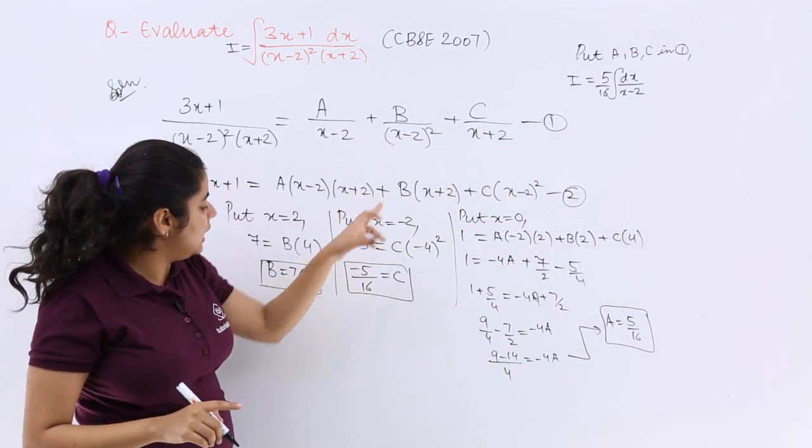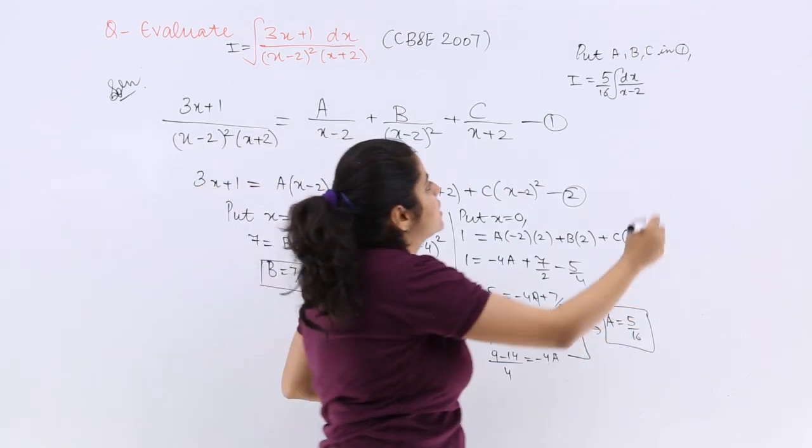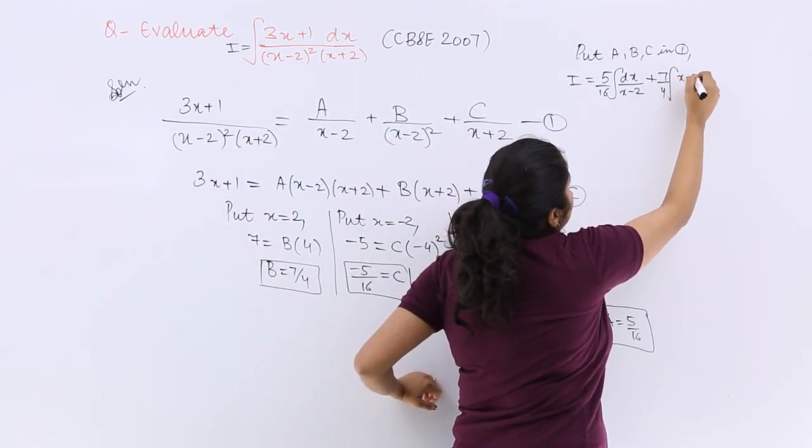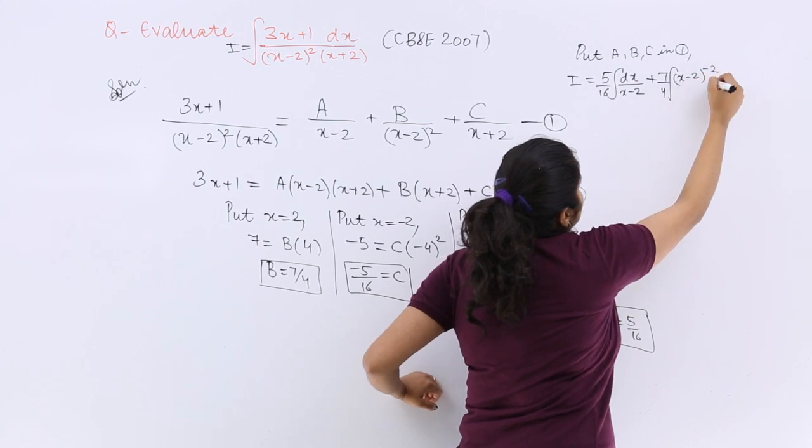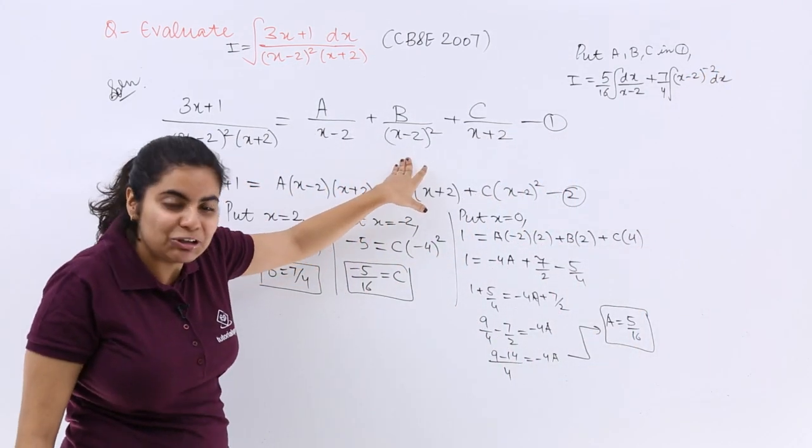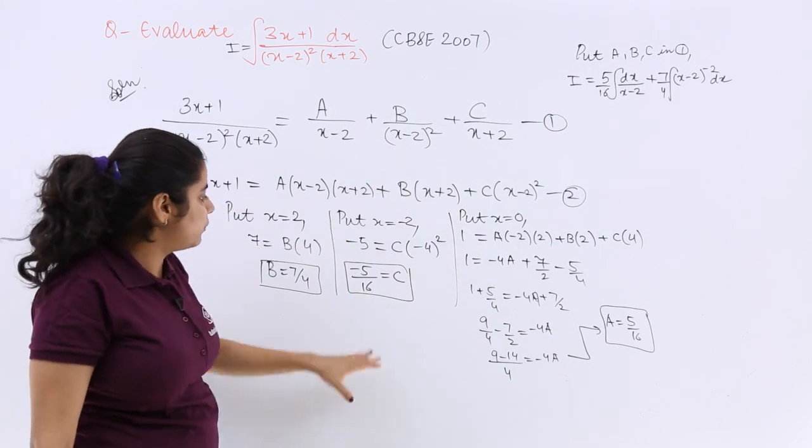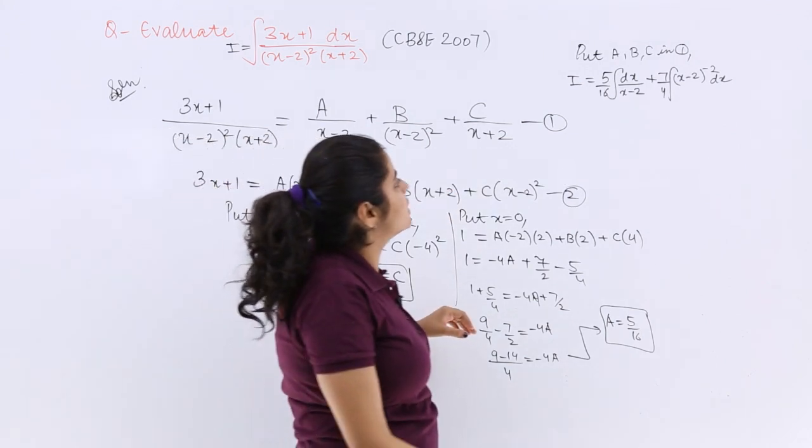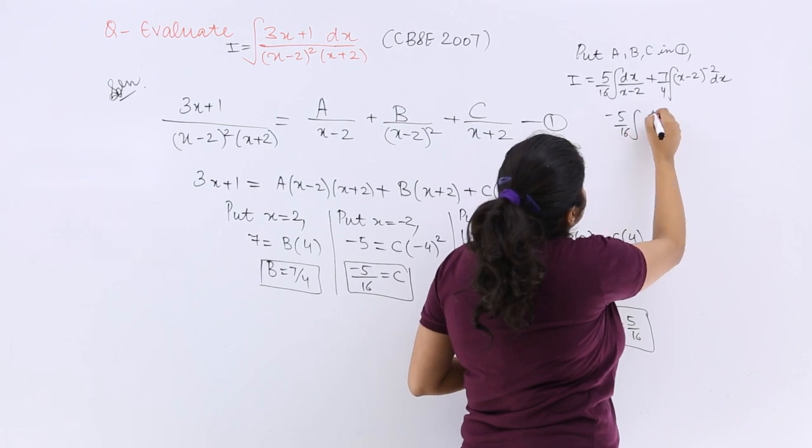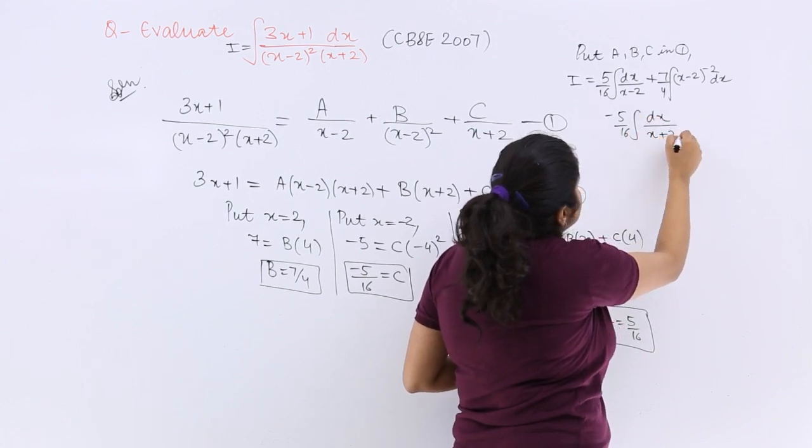What about B? B is 7 upon 4. So plus 7 upon 4 integration (x minus 2) raised to the power minus 2 dx, because as you can see here it is whole square in the denominator. Plus C, minus 5 upon 16, integration dx upon (x plus 2).